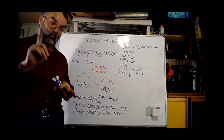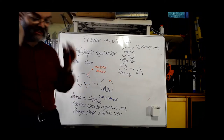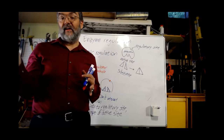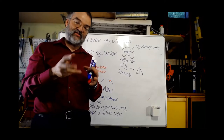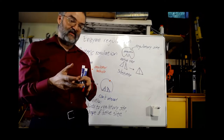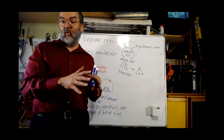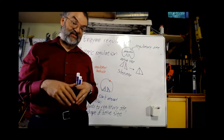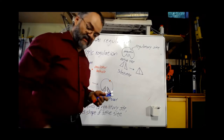In both allosteric inhibition and activation, the mechanism is the same: binding the regulator to the regulatory site changes the shape of the active site. That's allosteric regulation — one way to regulate enzymes. If I want an enzyme to turn off, I have a regulator molecule bind the regulatory site and change the active site so it doesn't work as well, freeing those substrates for other enzymes to act on.